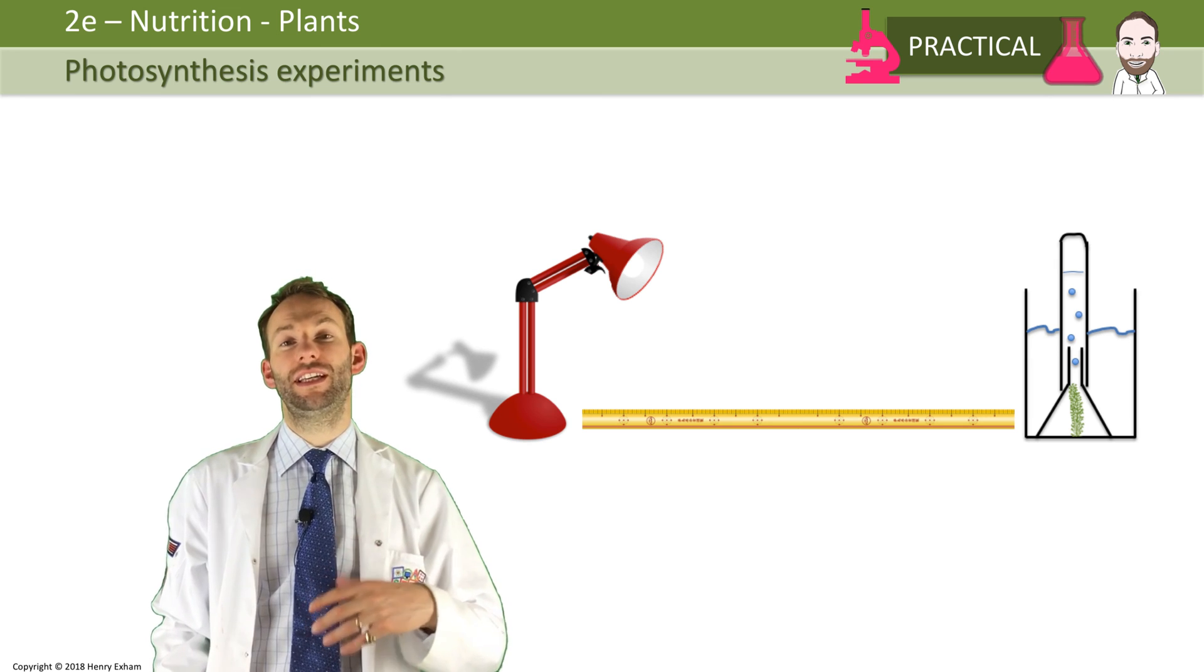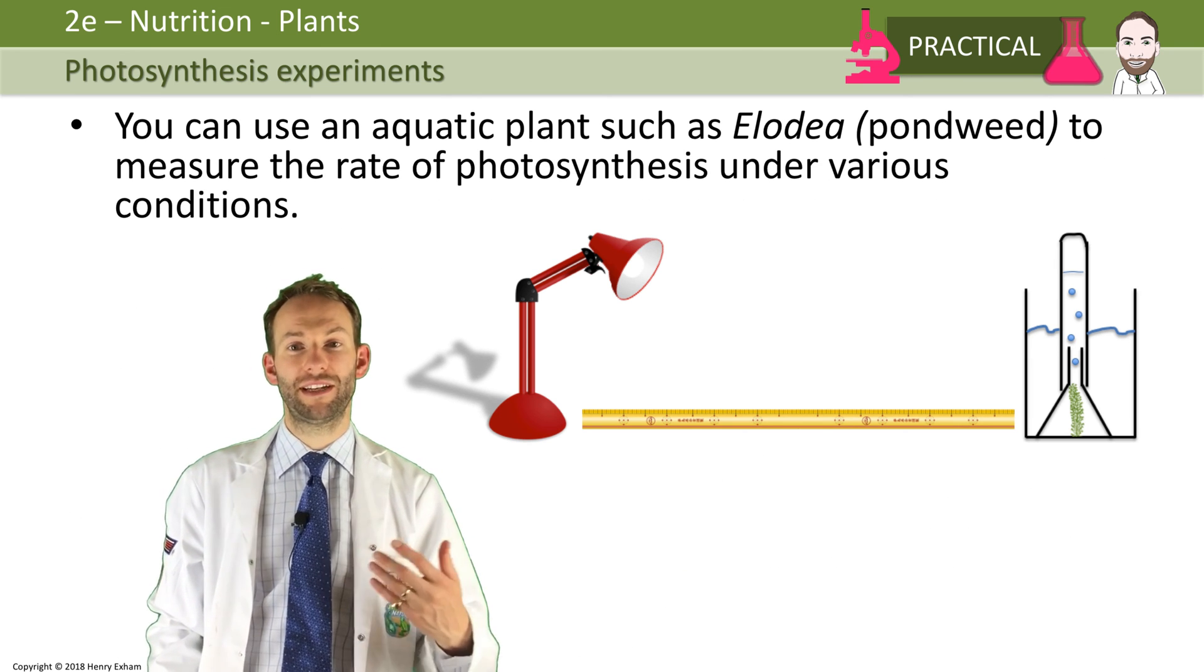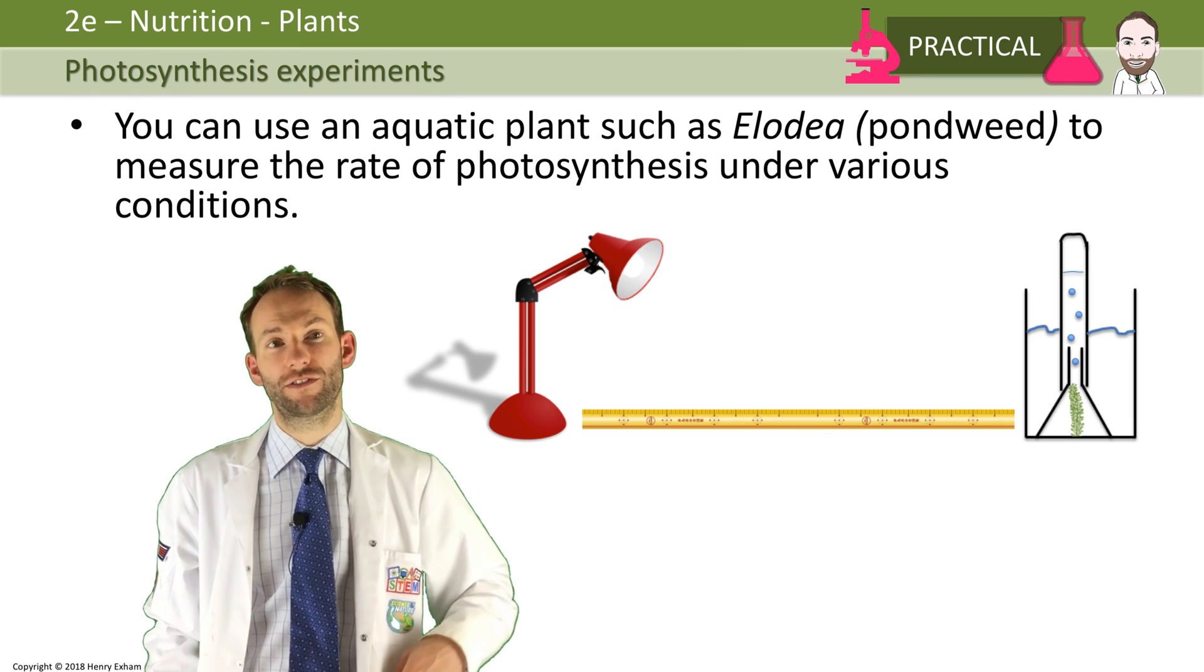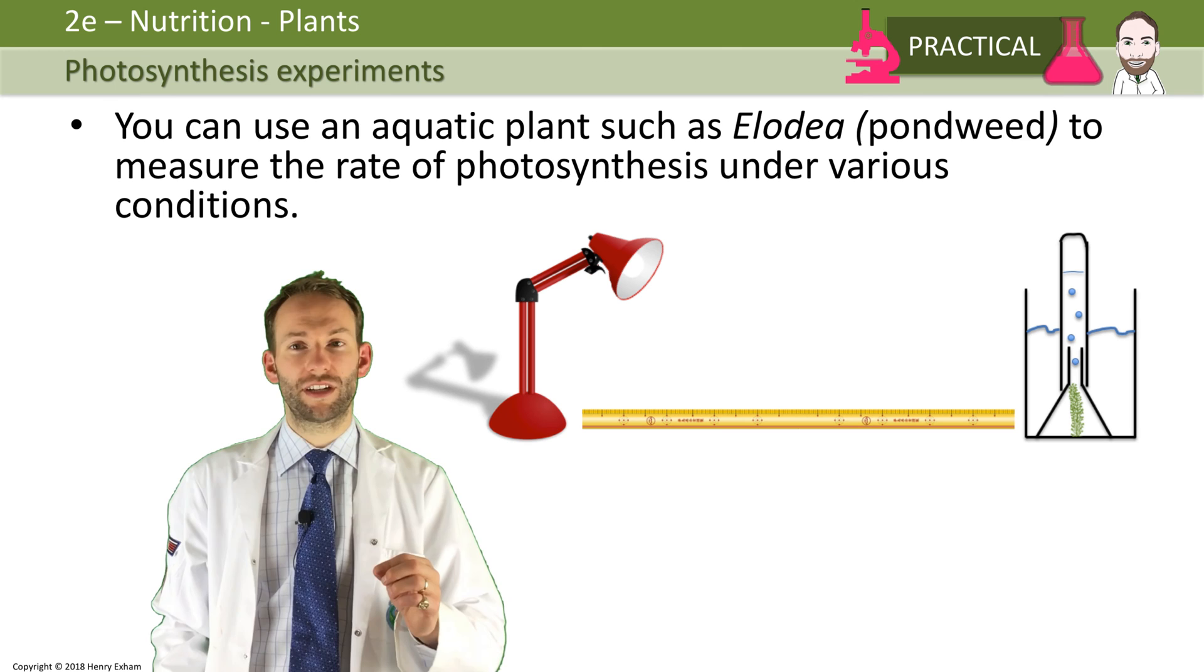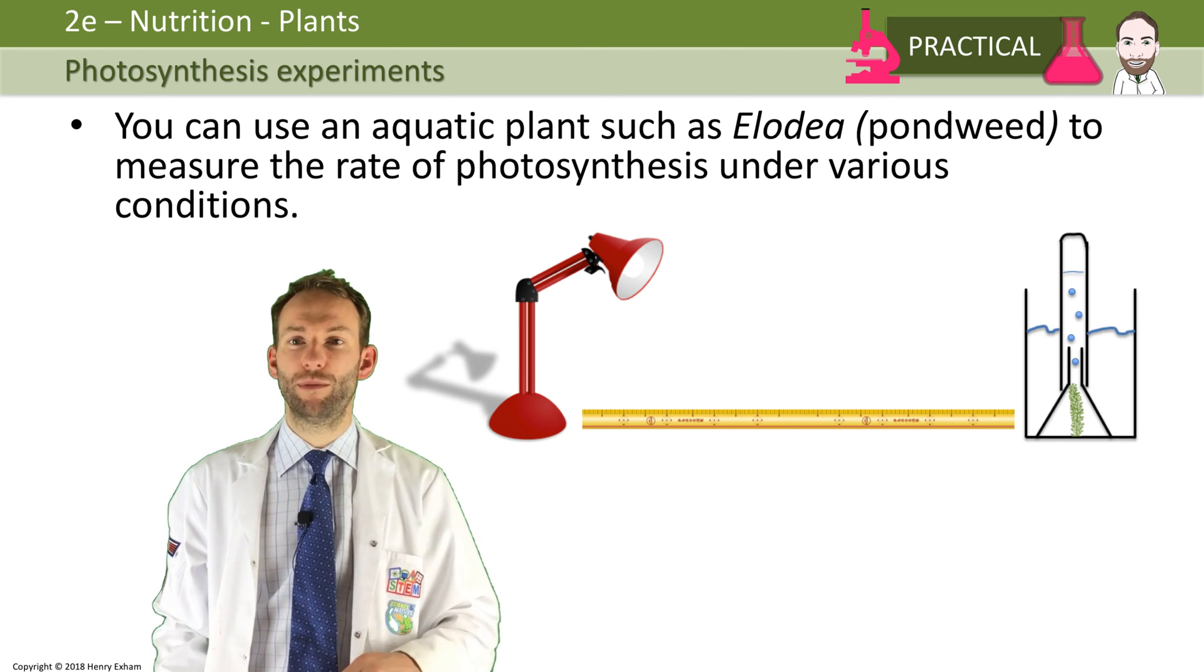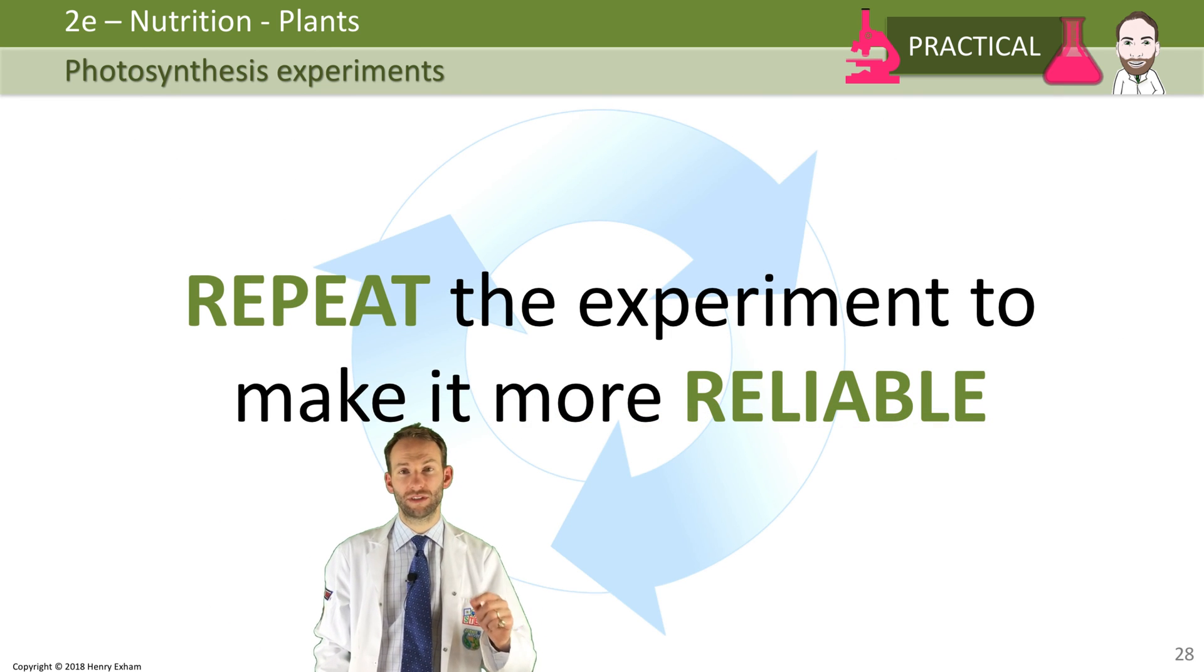What you can do is measure the number of bubbles produced in a minute. Count the bubbles produced in a minute and that gives you an idea of how fast photosynthesis is occurring in the plant. Measure the time for a minute, count the number of bubbles, record it, repeat the experiment. Repeating experiment always makes it more reliable - I always remember that as R equals R: reliability is to do the repeats, repeats is reliability.